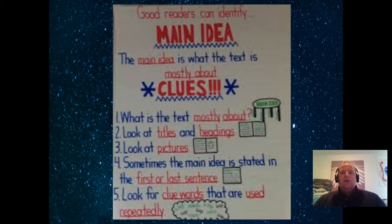One way to think about it are the clues. Number one, what is the text mostly about? So look for repeating words. Look at the titles and the headings. If it has pictures, look at the pictures. And sometimes you can identify the main idea of a text because it is easily stated in the first or the last sentence of the text or of a paragraph. And often you want to look for clue words that are used repeatedly. For instance, if I was reading about kangaroos, there might be the word kangaroo or words that relate to kangaroos in the text throughout.